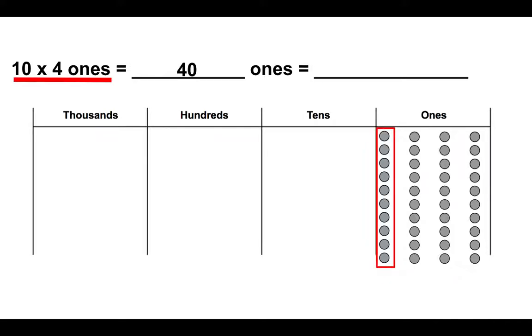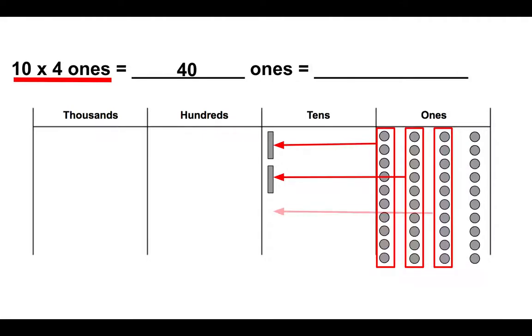How can I show forty ones in a different way? Well I can take the first group of ten ones and turn it into one ten. The next group of ten ones turns into another ten, the third group into a third ten, and the fourth group of ten ones into a fourth ten. I can say that forty ones is equal to four tens.